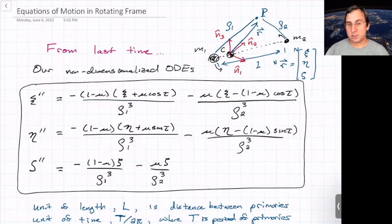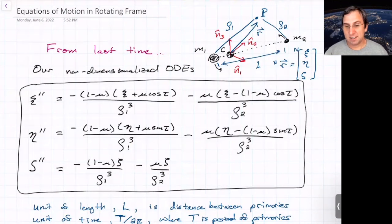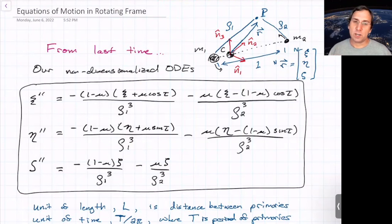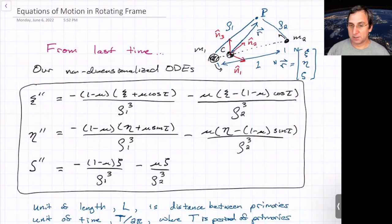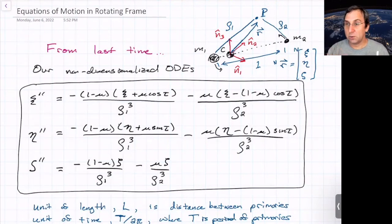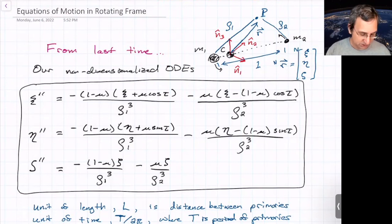So last time we looked at the equations of motion derived using the Newtonian method and wrote them in non-dimensional form. We used as the unit of length the distance between the two primaries, m1 and m2. For the unit of time, we introduced non-dimensional time tau, where one unit of tau is T over 2 pi, and T is the period of the primaries. For a spacecraft in the Sun-Earth system, mu is about 3 times 10 to the negative 6, the unit of length is 1 AU (about 150 million kilometers), and the unit of time is T over 2 pi where T is one year.